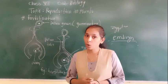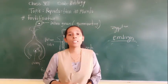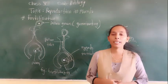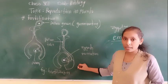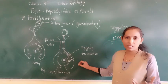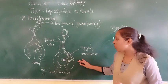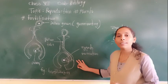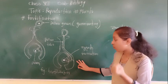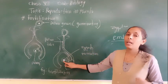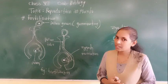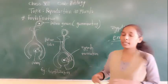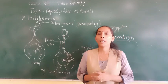After fertilization, what happens? There are several changes in the flower. The ovary starts to increase in size and slowly gets converted into the fruit. The fruit is nothing but a ripened ovary. The ovules present in the ovary get converted into seeds, and those seeds contain the embryo within them.